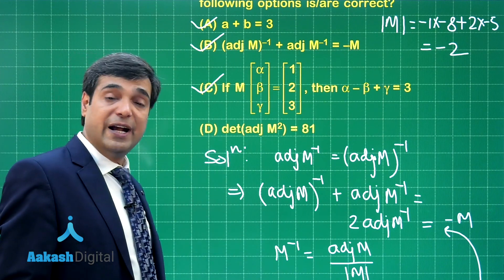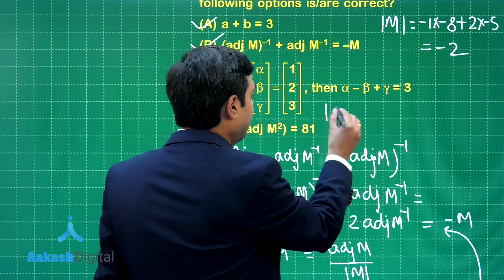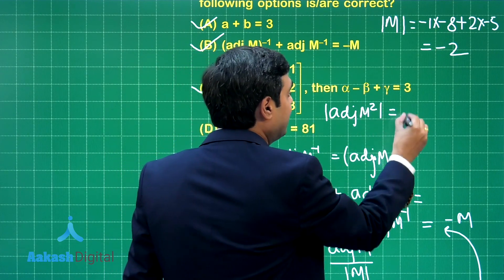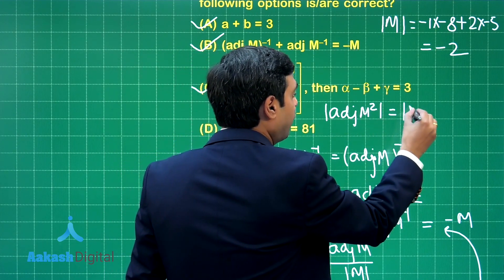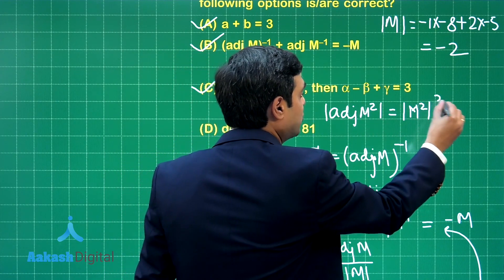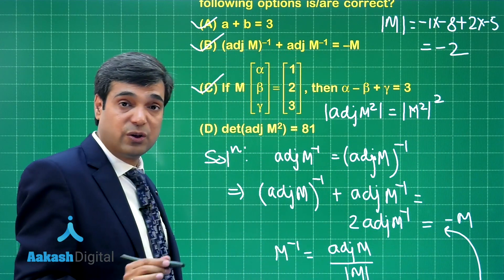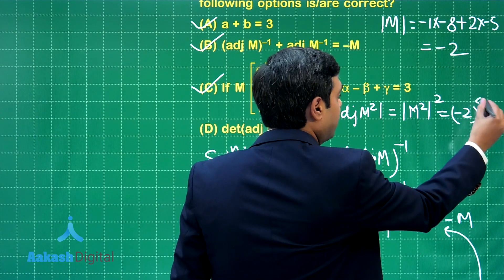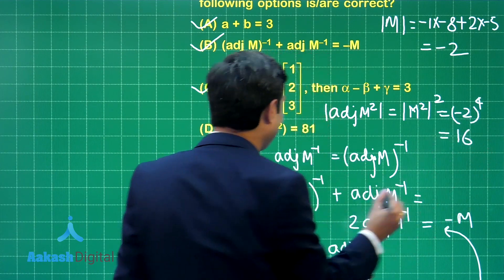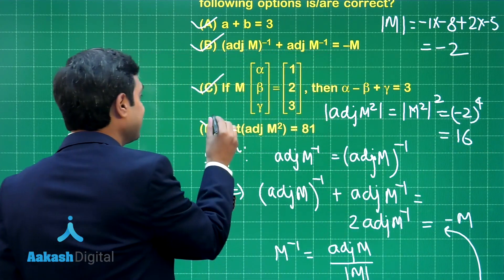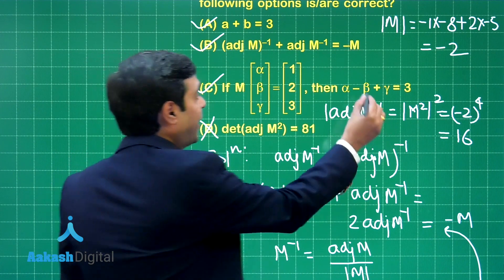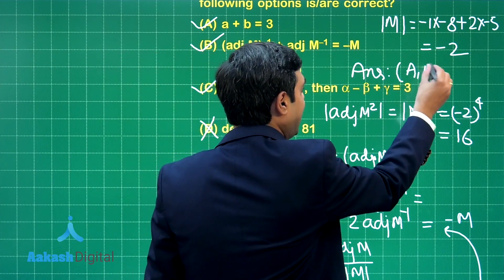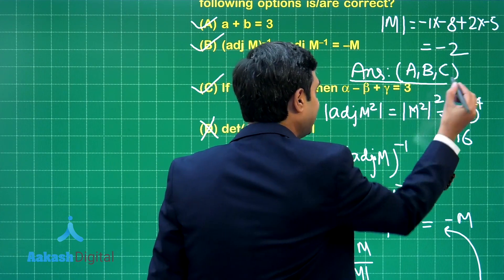For option D, determinant of adjoint M squared. We know determinant of adjoint M squared equals determinant of M squared, raised to the power 2 since M is a 3x3 matrix. This equals minus 2 raised to the power 4, or simply 16. So this is not the correct answer. We conclude the correct answers for this question are A, B, and C.